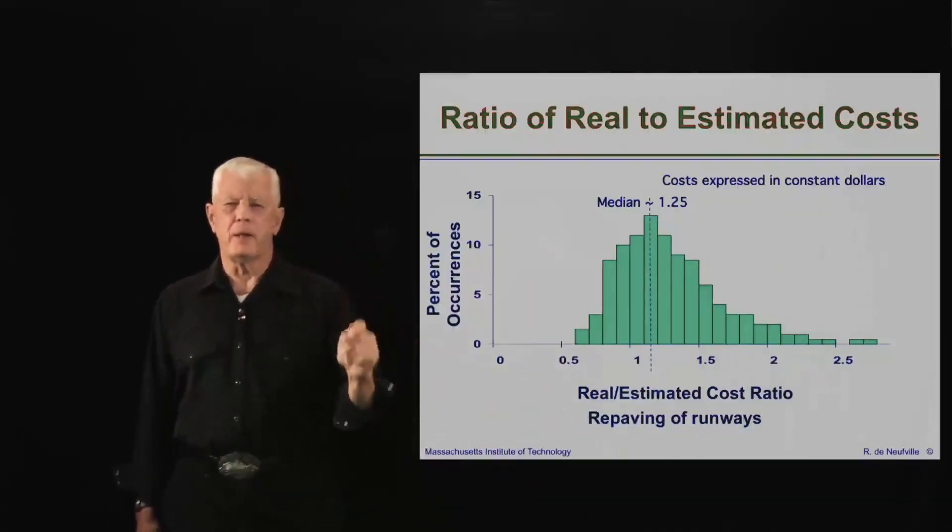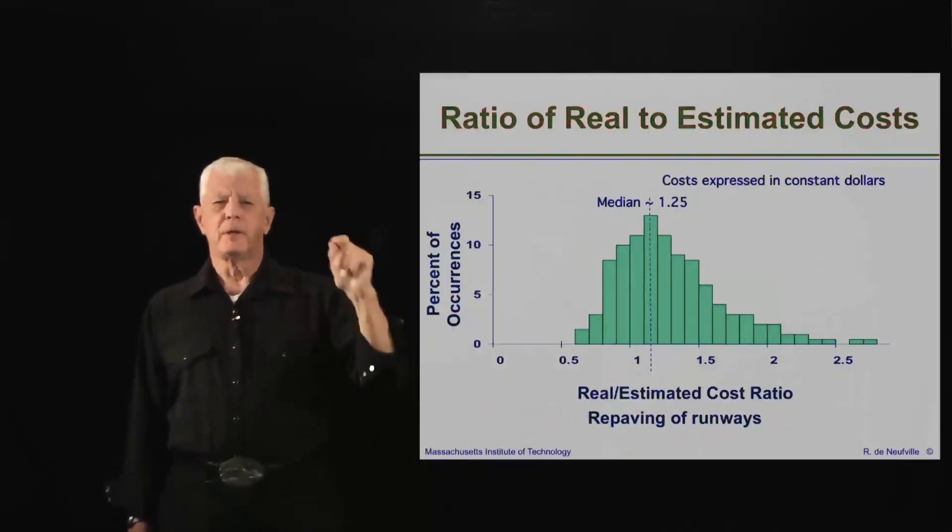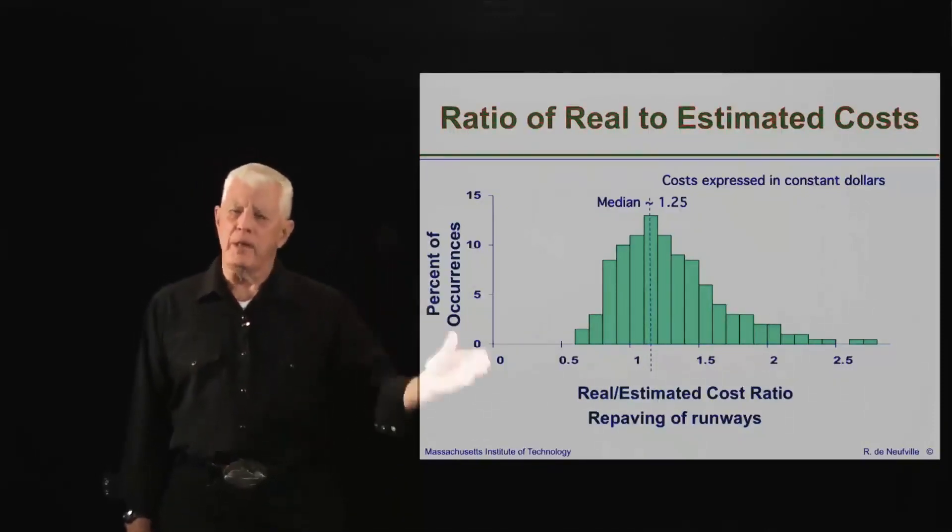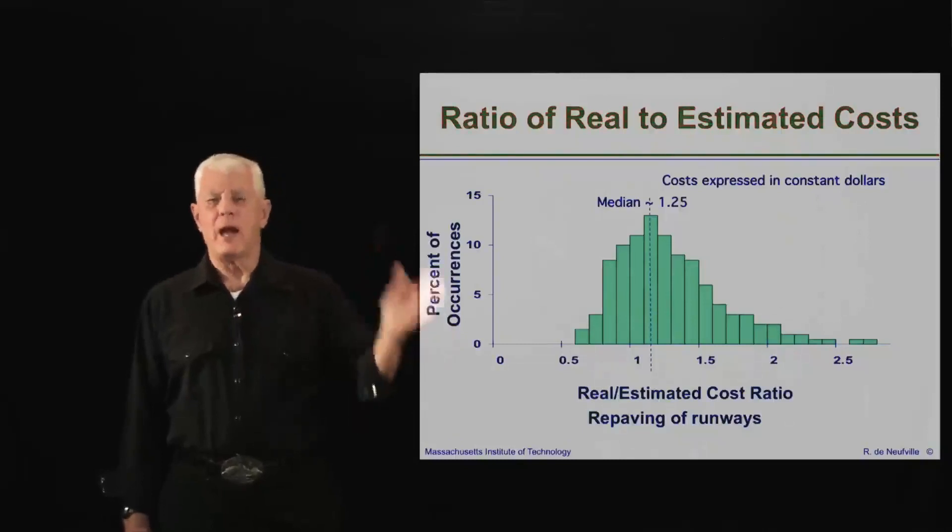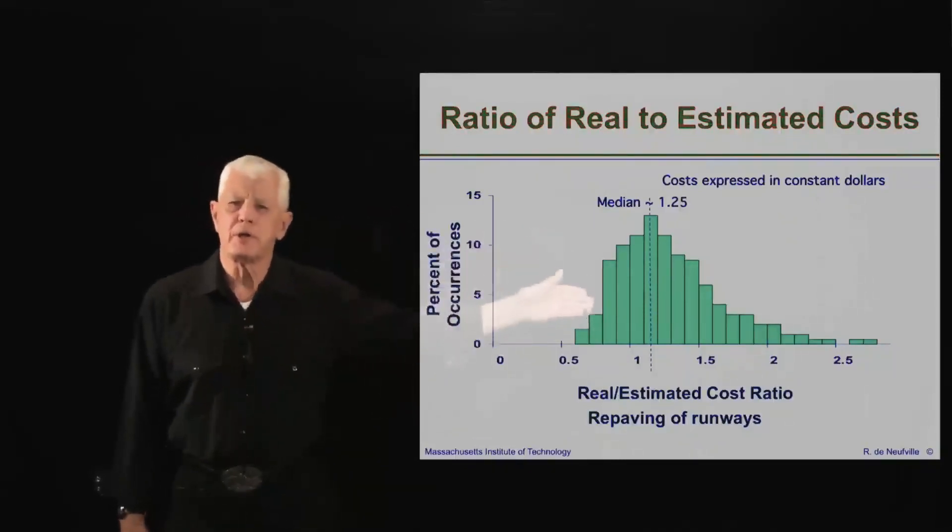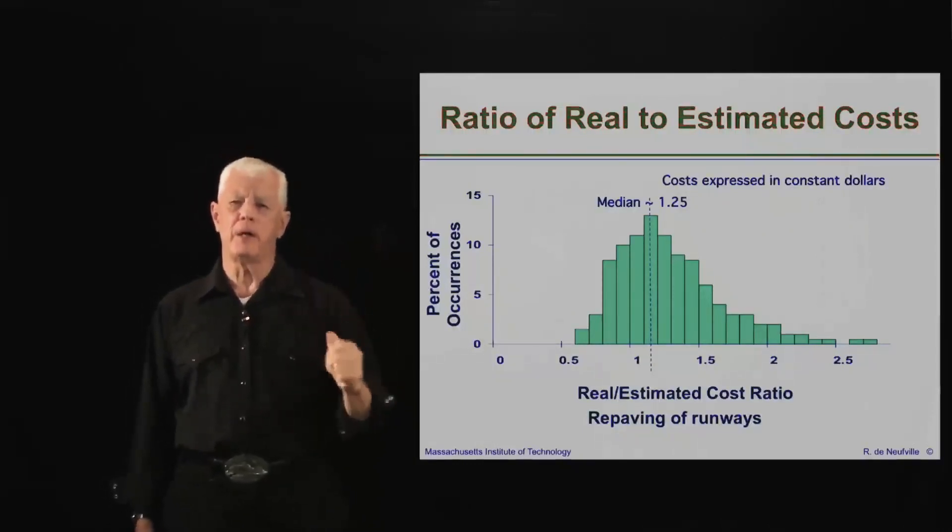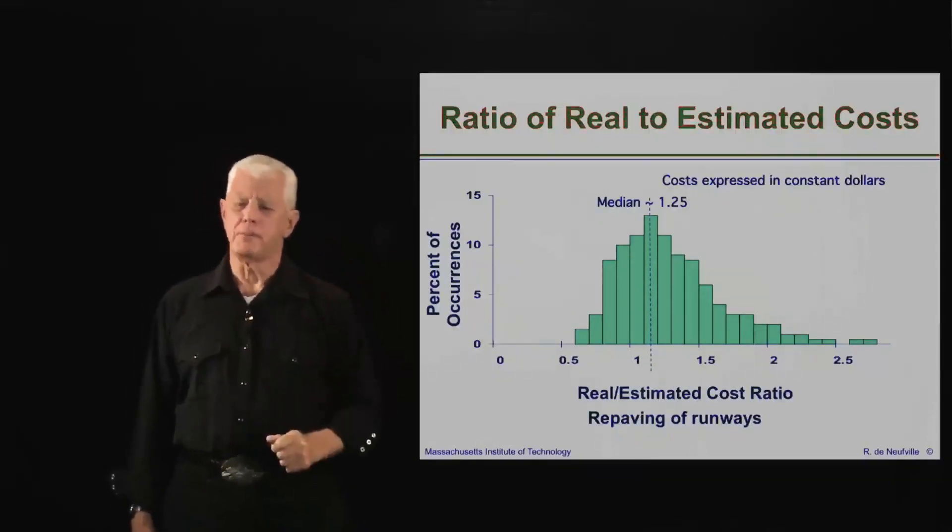But what's interesting about this case, which is so simple, is that we go from 1.25 as a median down to about half of it, 0.5 or 0.6, to about double of it. That is, our ability to predict the actual cost is off by a factor of two, half or double what actually is the most frequent cost. This is really remarkable. This is the kind of thing I'd like you to keep in your mind about how difficult it is.